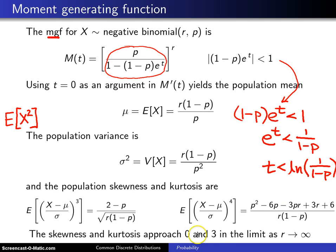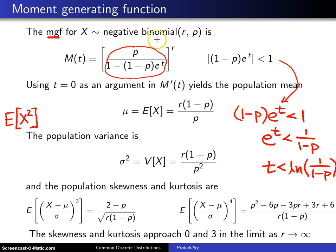The values 0 and 3 are the skewness and kurtosis of a normal distribution, which we'll see a little later. The conclusion is that as r gets larger and larger, the negative binomial distribution will assume a bell shape, and we'll see that going forward.